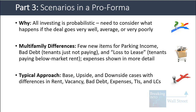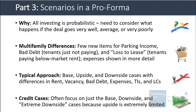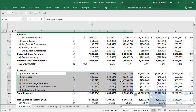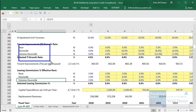The typical approach is to show base, upside, and downside cases — sometimes five or seven cases — with differences in rent, vacancy, bad debt, expenses, tenant improvements, and leasing commissions. In credit analysis, where you're a senior lender or mezzanine investor rather than an equity investor, you focus on the base, downside, and extreme downside cases, because the upside is very limited and you want to assess your chances of losing money. That's exactly what we do here — we have base, downside, and extreme downside cases, with no upside case.